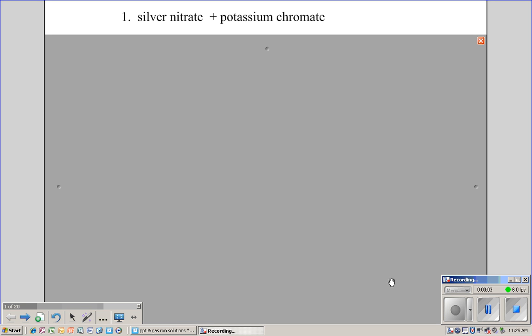The first problem in the precipitation reaction, the ones that were called round 4, is silver nitrate plus potassium chromate.